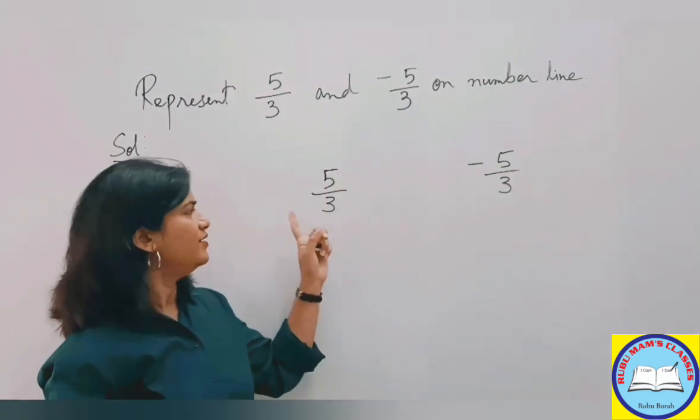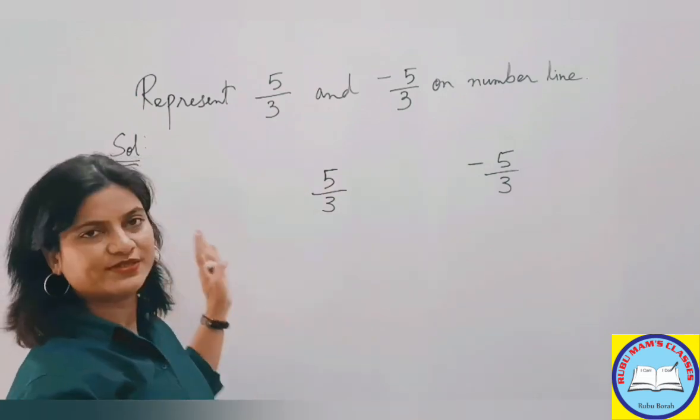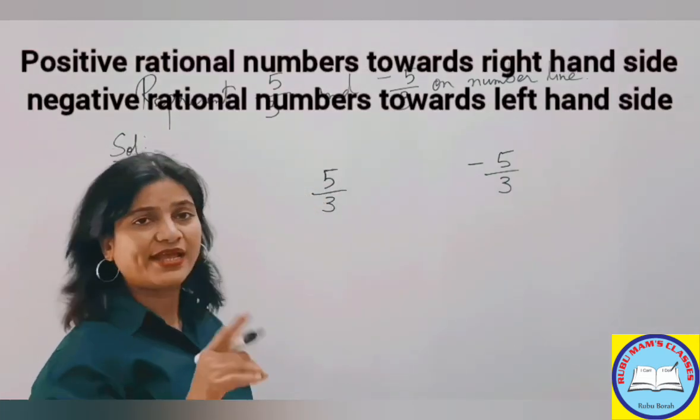One is positive, one is negative, so one would be towards the right hand side and one would be towards the left hand side. That much you are aware of.